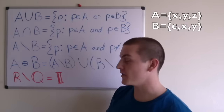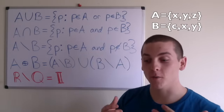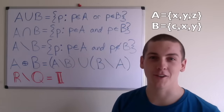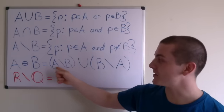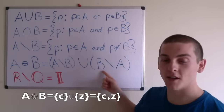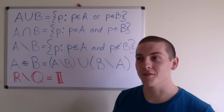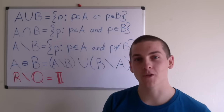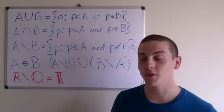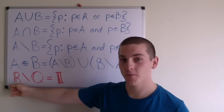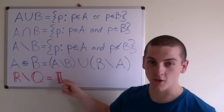And finally, we have the symmetric difference, which is going to be very helpful when you actually complete the symmetric difference algorithm challenge. The symmetric difference of A and B equals the set difference of A and B union with the set difference of B and A. And finally, I will define the irrational numbers — the irrational numbers are simply the real numbers minus the rational numbers.